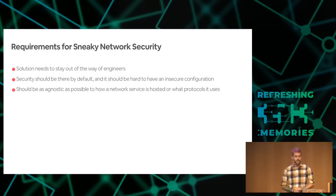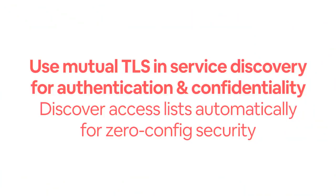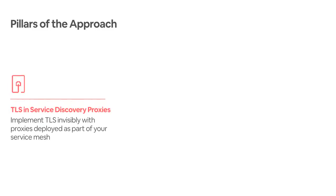Here's the whole solution condensed into two sentences: we're going to use mutual TLS built into the service discovery system for authentication and confidentiality across all service communications, and we're going to discover those access lists totally automatically for security with zero to almost zero configuration. We've isolated three pillars. The first is TLS in service discovery — we love TLS, it's one of the really powerful protocols the security industry has built, and by integrating it into service discovery we can make sure it runs everywhere without a lot of per-app configuration.